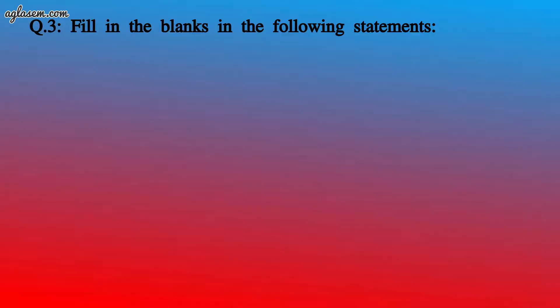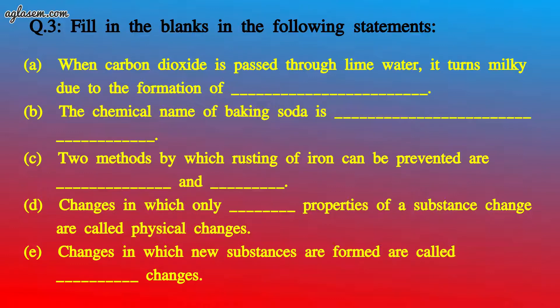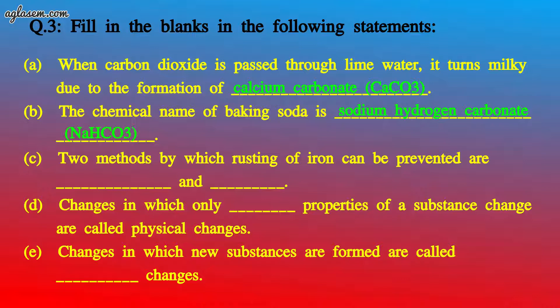Question 3: Fill in the blanks. A) When carbon dioxide is passed through lime water, it turns milky due to the formation of calcium carbonate (CaCO₃). B) The chemical name of baking soda is sodium hydrogen carbonate (NaHCO₃). C) Two methods by which rusting of iron can be prevented are galvanization and painting.